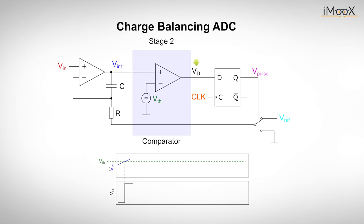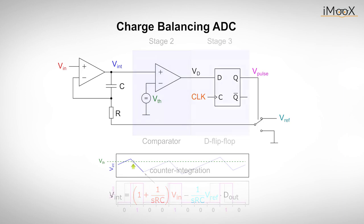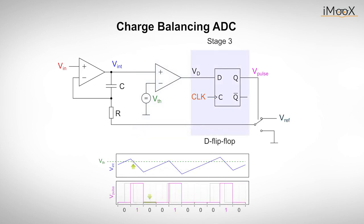The output D of the comparator is low until Vint has exceeded the threshold voltage. In this case, the comparator then triggers a so-called D flip-flop, which sets its output high at the next rising edge of the clock. This in turn leads to a counter integration process. A certain amount of charge is sucked off over the time of a clock cycle. If Vint falls below the threshold voltage, the output is low at the next clock cycle.